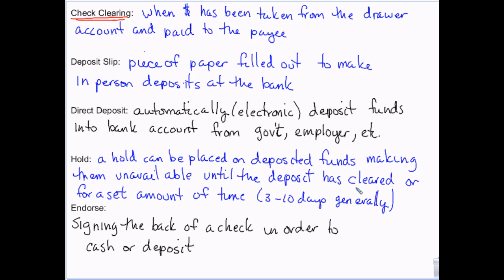If you don't sign your check and you make a deposit at the ATM — this has happened to me — I didn't sign the back of a check and deposited it, and the bank went to process it and saw it wasn't signed. So they stuck it in an envelope and mailed it back to me. The money never went into my account until later when I got the check in the mail, signed it, and went back to the bank. There was like a five-day delay on that money because I forgot to sign the back.